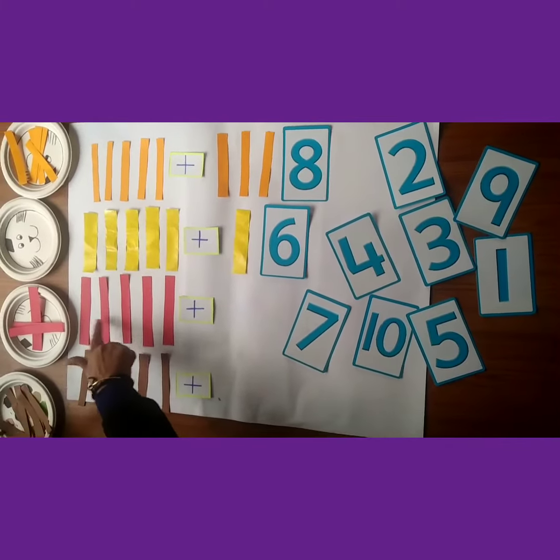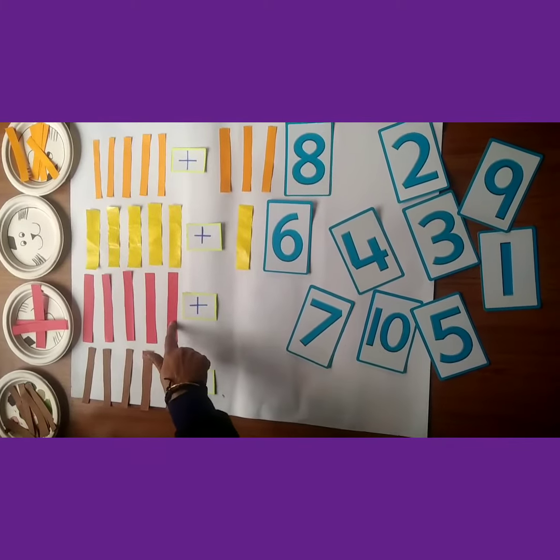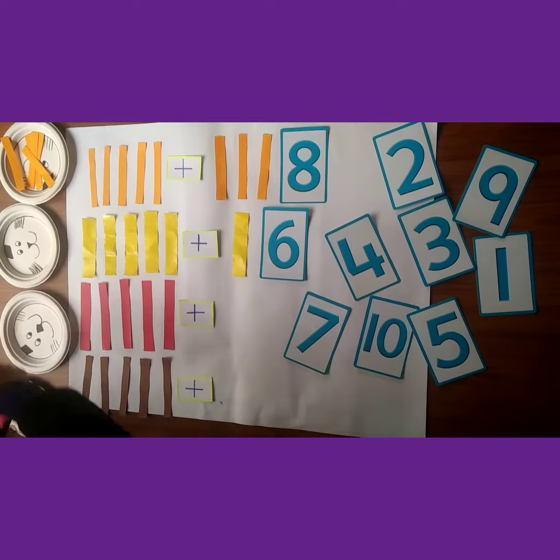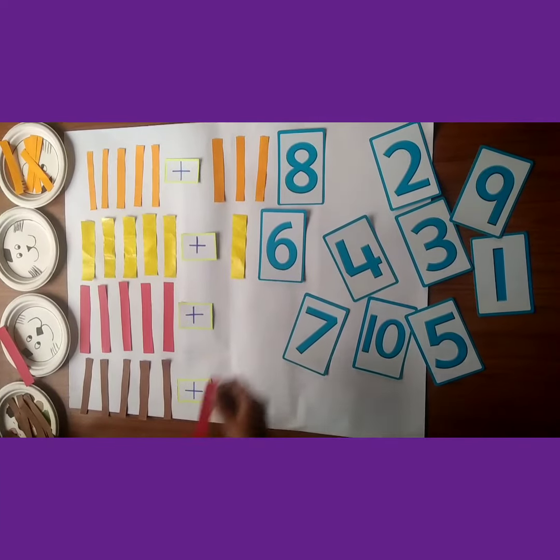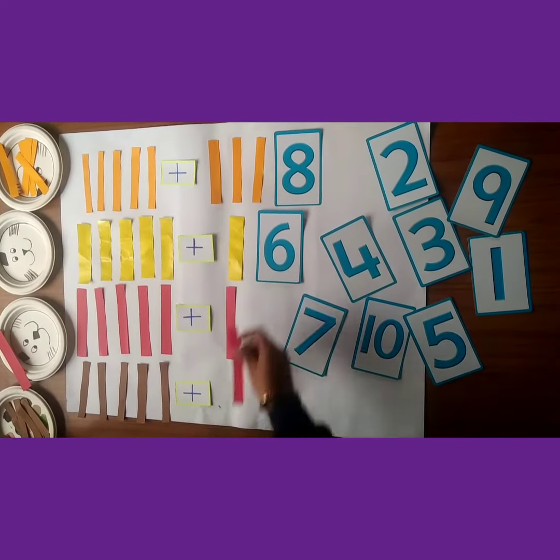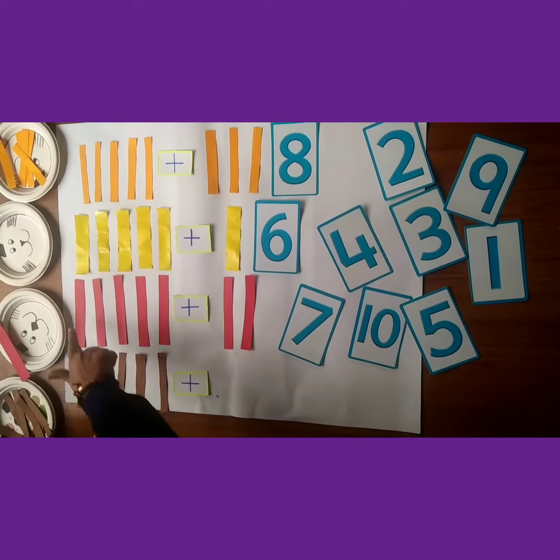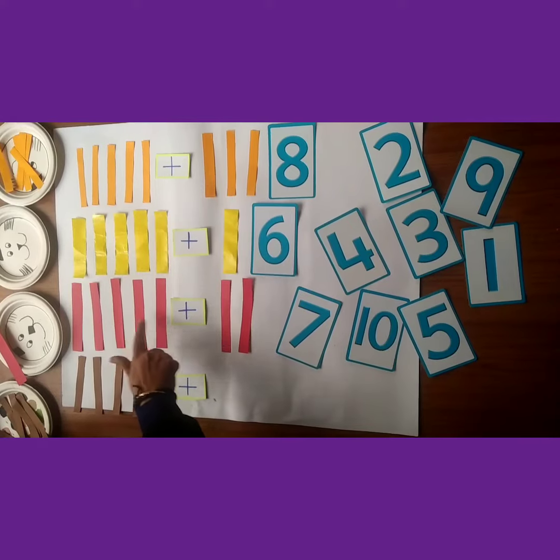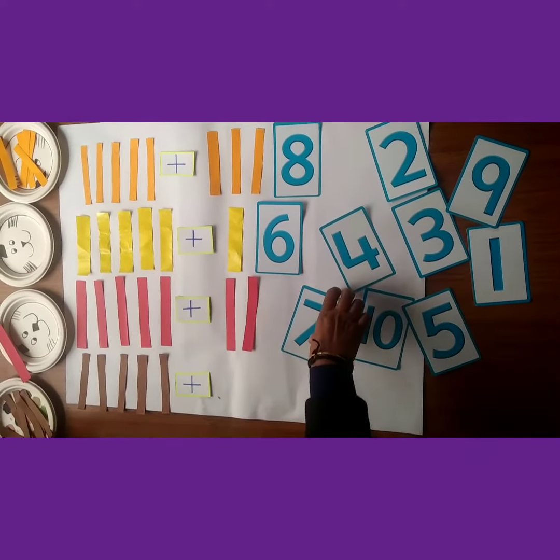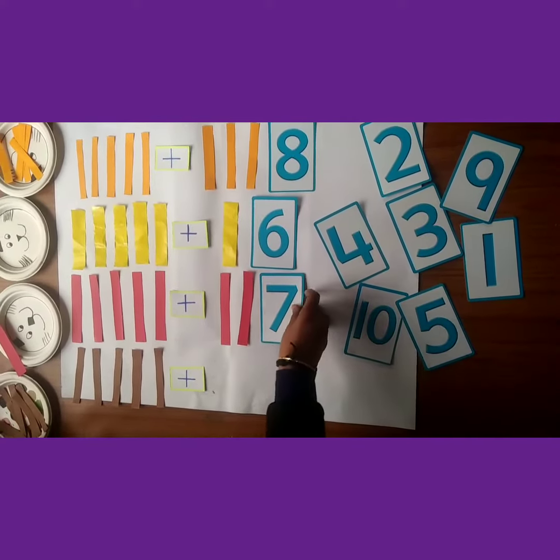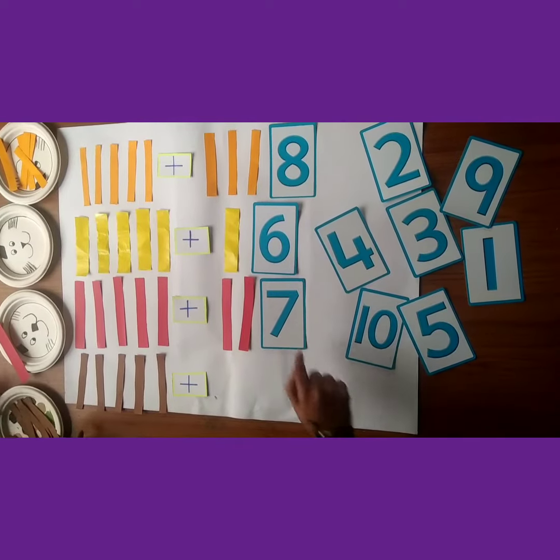In this row: 1, 2, 3, 4, 5. We add 2 more: 1, 2, 3, 4, 5, 6, 7. Pick up the 7 number flash card and place it near the strips.